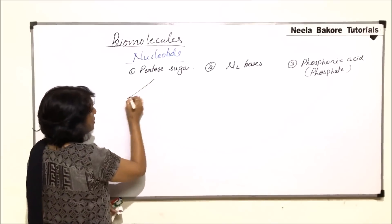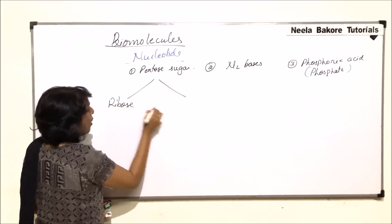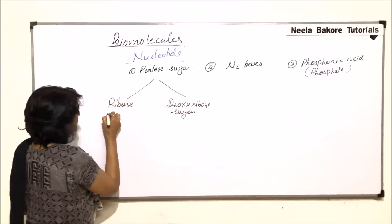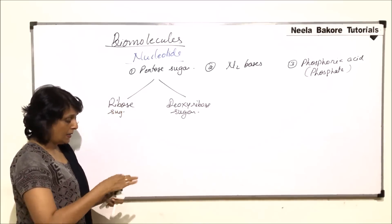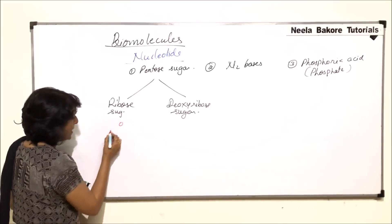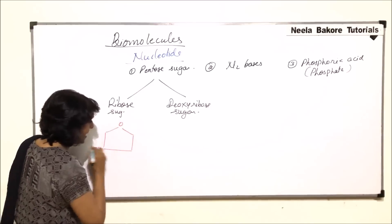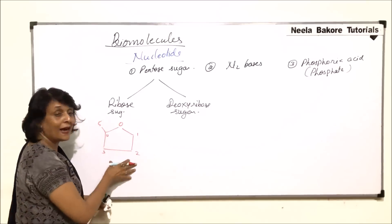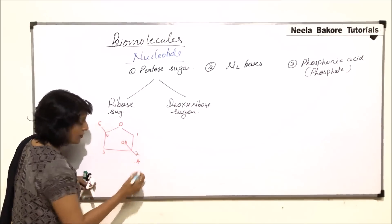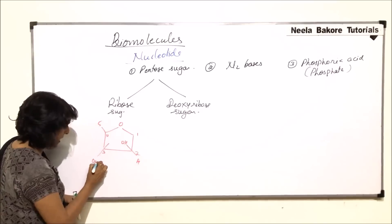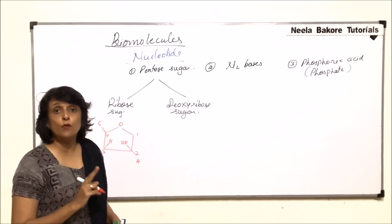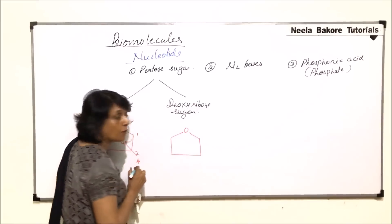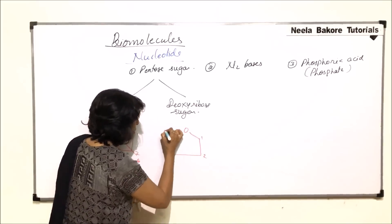Pentose sugars, as the name tells us, are five-carbon sugars. They can be of two types: ribose sugar or deoxyribose sugar. Let us draw the structure quickly. Ribose sugar has one oxygen and four carbons in the ring — carbon number one, two, three, four, and five. At carbon number two we have the functional group OH, and at carbon number three there is again OH.